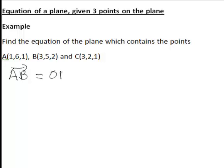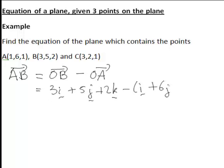The vector AB is equal to OB minus OA, so in this case that will be 3i plus 5j plus 2k minus i plus 6j plus k. Working that out, therefore AB in this case will be equal to 2i minus j plus k.